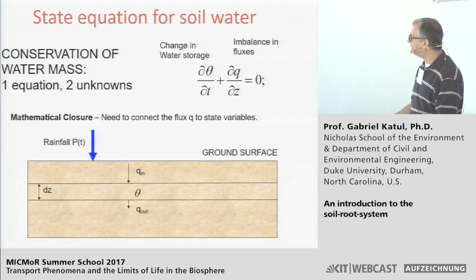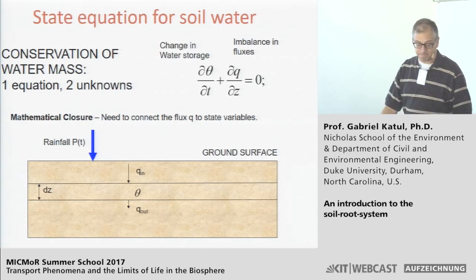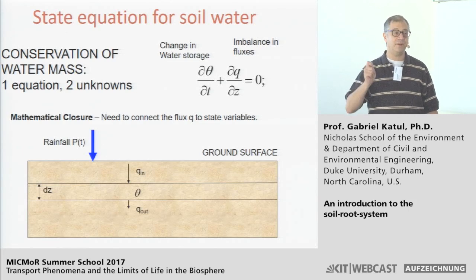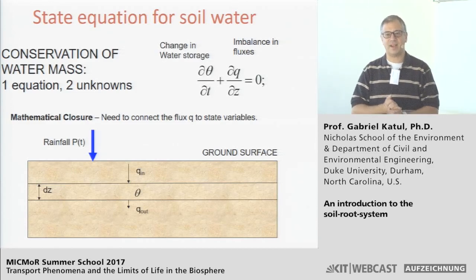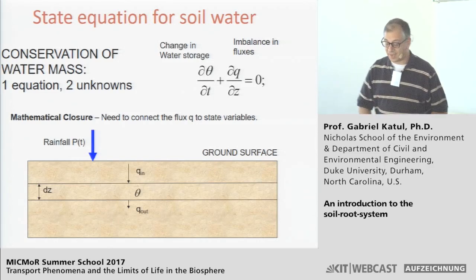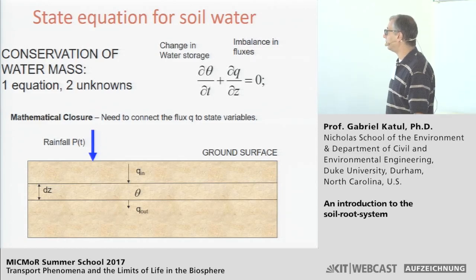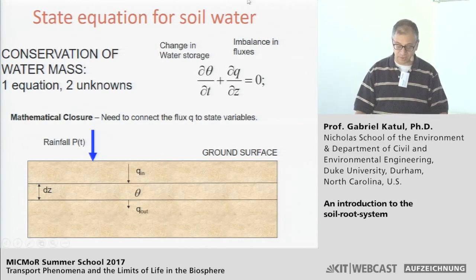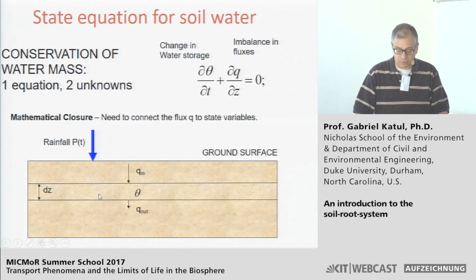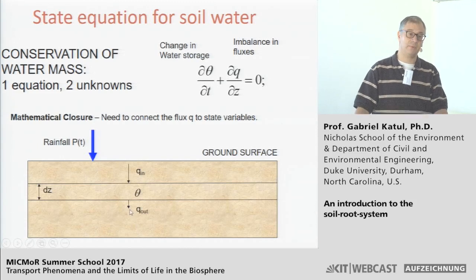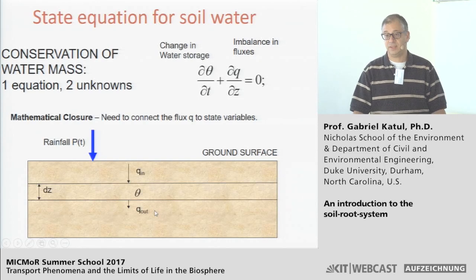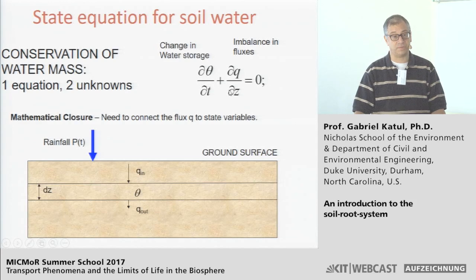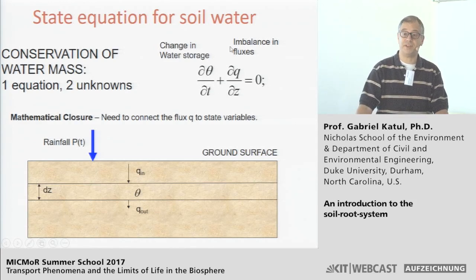If we accept the REV idea and assume we can define a volumetric soil moisture content that is scale-independent, we can write a conservation of mass equation in a continuum fashion. Consider a layer in the soil: if water enters and water leaves, and what enters does not equal what leaves, water must be stored in the pores. The imbalance between flux in minus flux out is responsible for changing the volume of water per unit volume — this is our continuity equation, or conservation of mass of water.